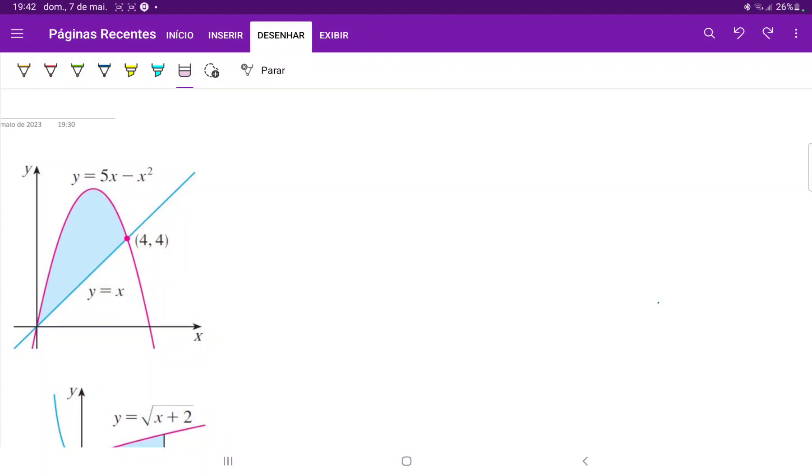We know that the area beneath the curve is given by the integral. We need to think about how we're going to set up this integral, because if we take the integral of the pink curve, we're taking the whole area beneath it.